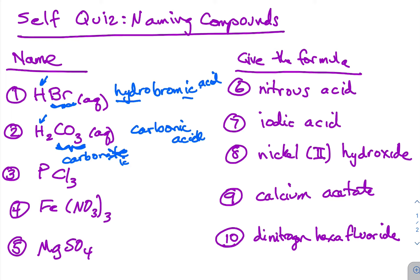This next compound is a molecular compound. We've got two nonmetals — phosphorus and chlorine — both from the right-hand side of the periodic table. So we're going to use our naming rules for that: this is going to be phosphorus trichloride. Remember, we drop the 'mono' at the beginning when there's only one of the first element — we do not say 'monophosphorus trichloride.' It's just phosphorus trichloride.